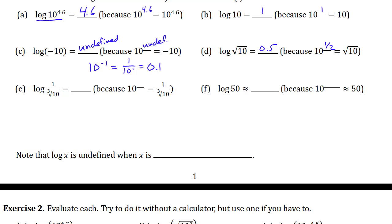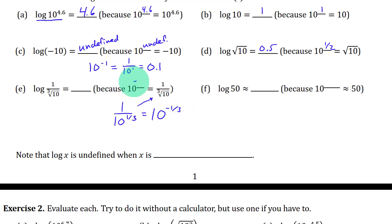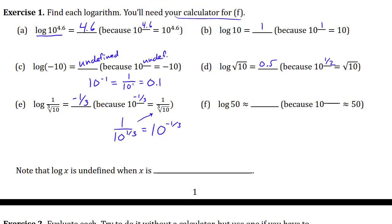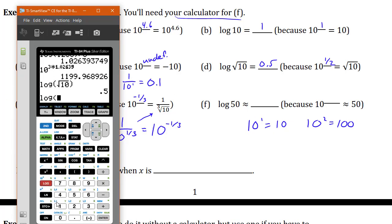This one's a little trickier: you have 1 over the cube root of 10. Well, 1 over the cube root of 10 is the same as 1 over 10 to the 1/3 — that's what the cube root means. And if you want to write that without a fraction, that's what a negative exponent does. So 10 to the power negative 1/3 is the same as 1 over the cube root of 10. The result here is negative 1/3. For part f, we need a calculator — the answer is somewhere between 1 and 2 because 10^1 = 10 and 10^2 = 100, and 50 is between them. With a calculator, you get 1.699.